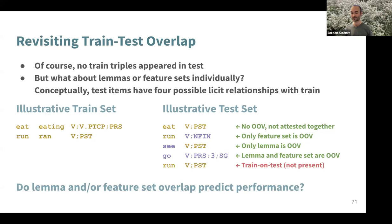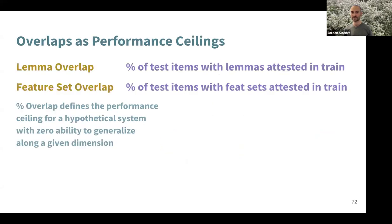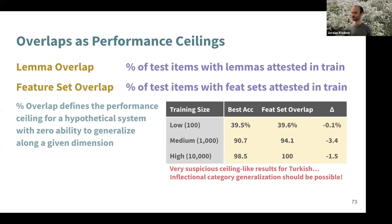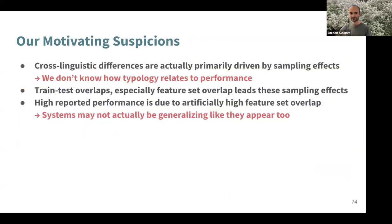Does this overlap predict performance? We can measure lemma overlap and feature set overlap as the percent of test items whose lemmas or feature sets also appear in training. Looking at Turkish across different training sizes, I found that in 2018, lemma overlap didn't matter much, but feature set overlap did — top-performing systems were consistently a point or two or three below ceiling, suggesting that generalization across feature sets may not be occurring. If true, it's actually how the data was sampled that's driving performance rather than the languages or models themselves.